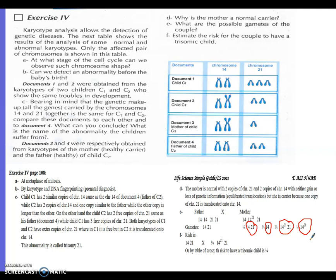Last idea: estimate the risk for a couple to have a trisomic child. If this gamete and this gamete fertilize, you'll get two 14, two 21, normal. If the second gamete fertilizes, you'll get one 21, two 14, one 21. If the last gamete, this one, fertilizes with this one, you'll get two 14 and two 21, normal but carrier.